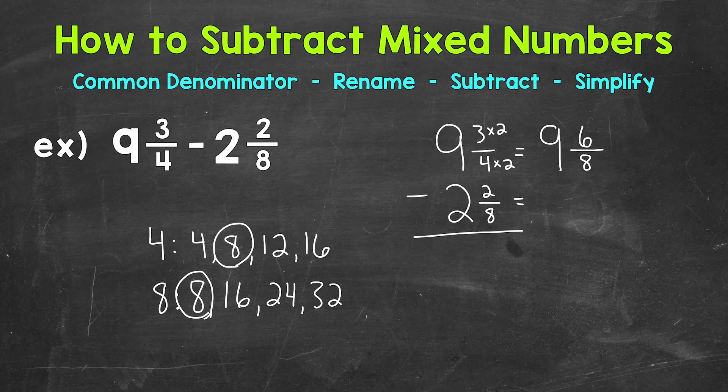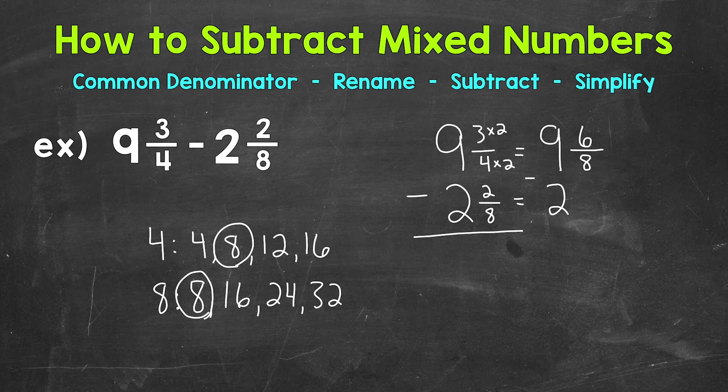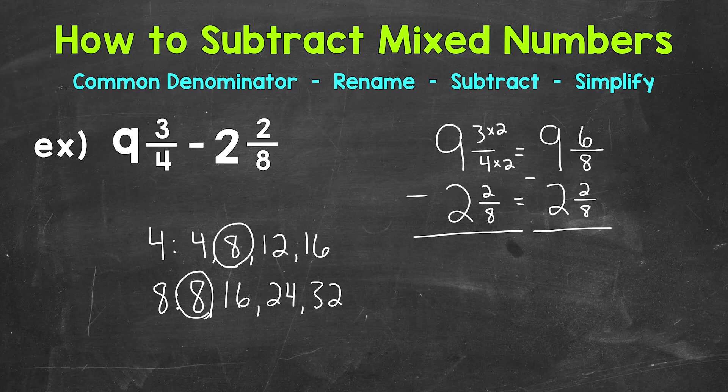So let's do 2 and 2 eighths now. We'll put our subtraction sign there. Now 2 and 2 eighths, that already has a denominator of 8. So we do not need to do anything with that mixed number, and specifically the fraction, again, because we already have that denominator of 8. Now that we renamed what we needed to rename, we have a common denominator of 8, and we're able to subtract.